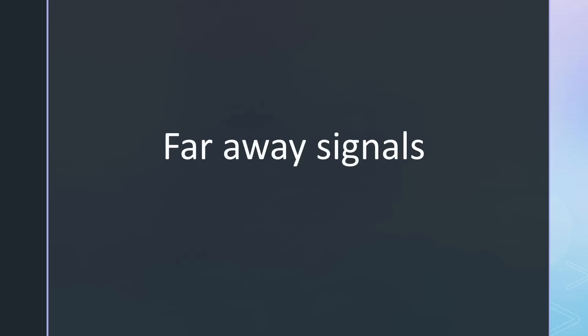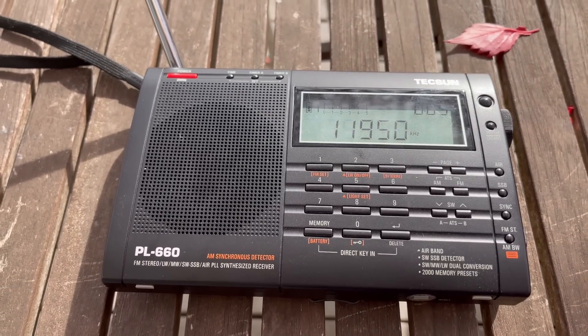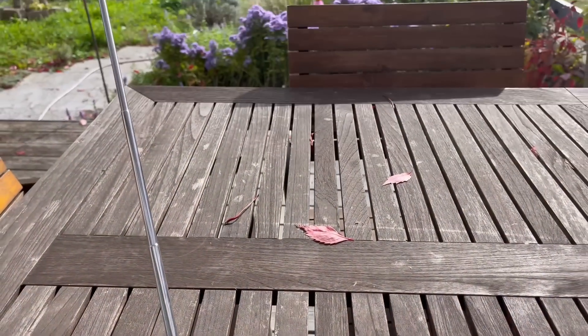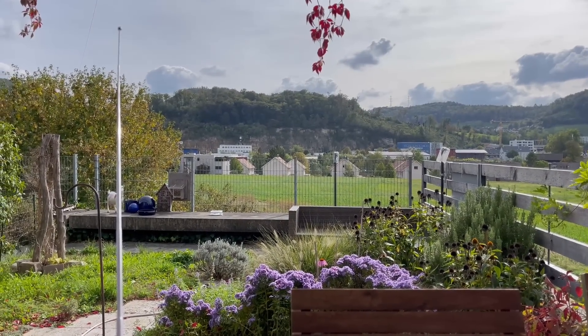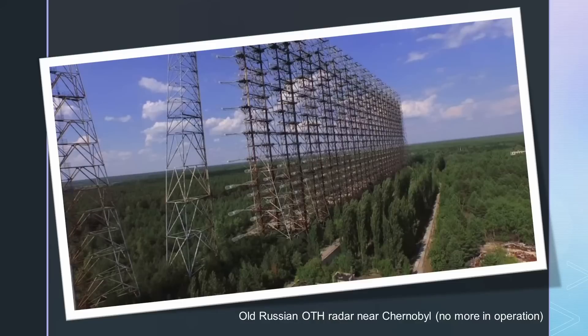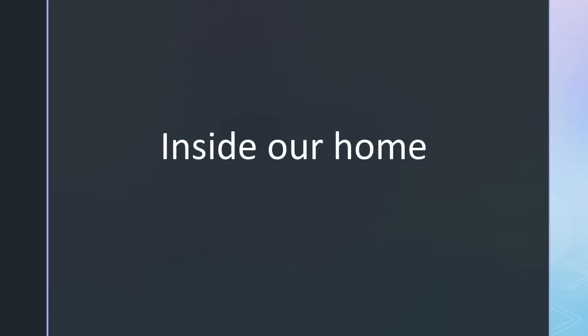Next, how do we distinguish between signals from these three categories? Let's begin with category 1. Signals originating from distant sources often exhibit varying signal strength or are absent at different times of the day because of propagation. Radio stations can be identified using a simple receiver as they operate on specific frequencies and often can be demodulated. On the other hand, over-the-horizon radars disturb a wide range of frequencies and are best observed in a waterfall display.